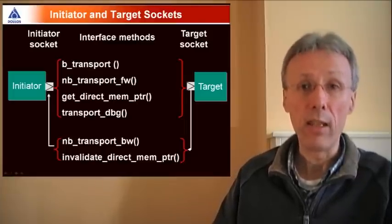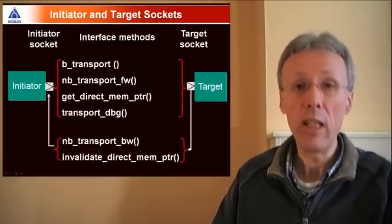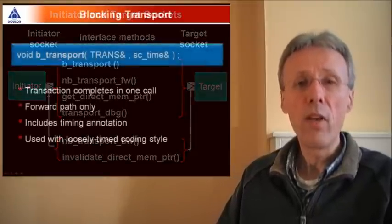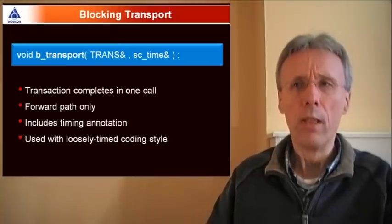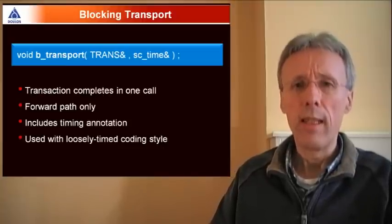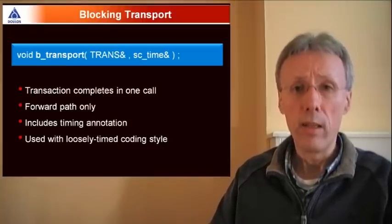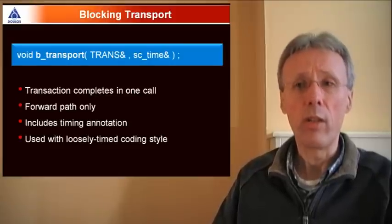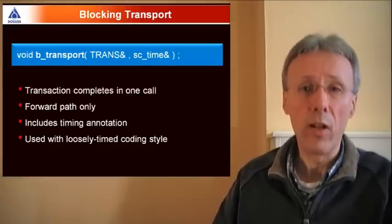Let's investigate those core interfaces in a little bit more detail, because they're the first step toward achieving interoperability in TLM2. First, blocking transport. The BTransport method is the most straightforward way to pass a memory map bus transaction. The complete transaction executes in just a single function call.